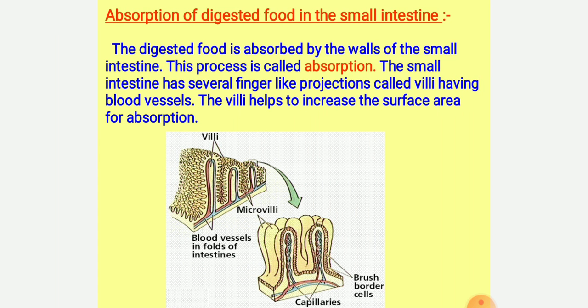The inner wall of the small intestine has millions of finger-like projections or folds which are called villi, and each villus is supplied with thin blood vessels called capillaries.